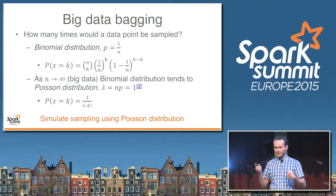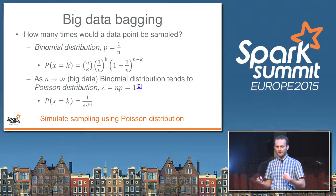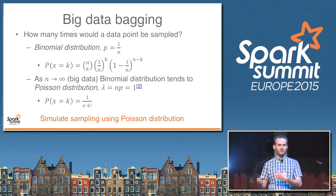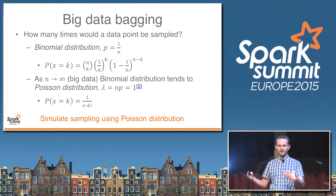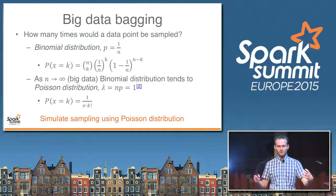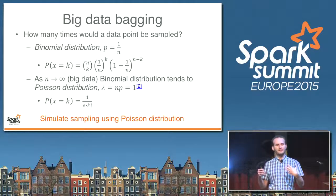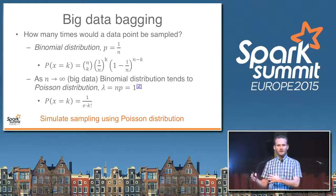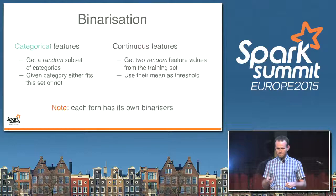Fortunately for us, there is a mathematical distribution called the binomial distribution which allows us to model that. What's more — and this might be surprising — the fact that we are working with big data makes things easy. Because as the number of elements we are sampling from grows to infinity, the binomial distribution tends to the Poisson distribution, which has an even simpler probability density function. So, instead of sampling individual objects, we will sample the number of occurrences.